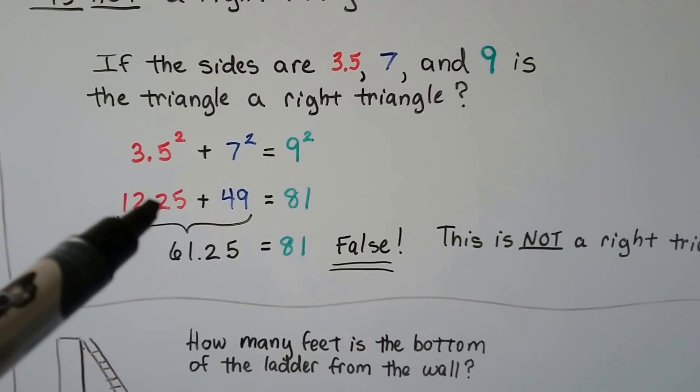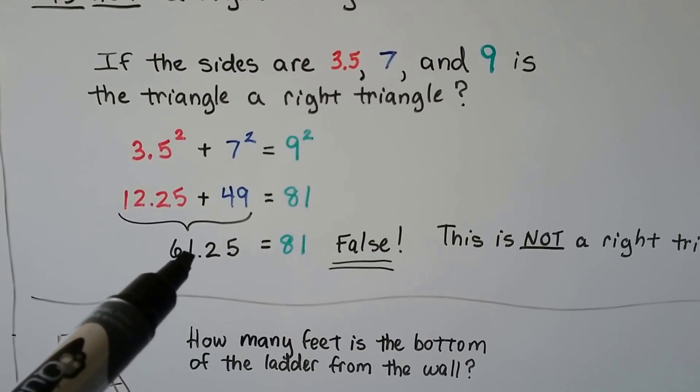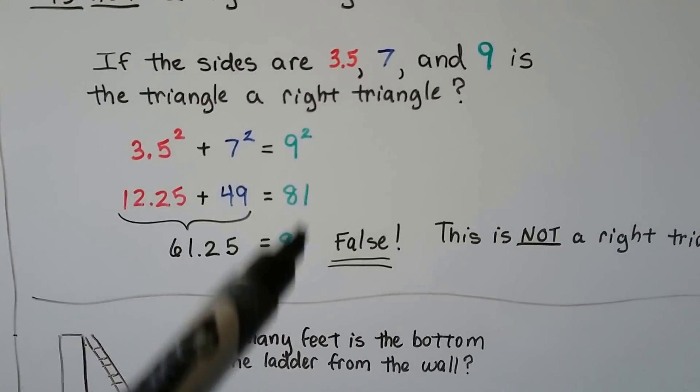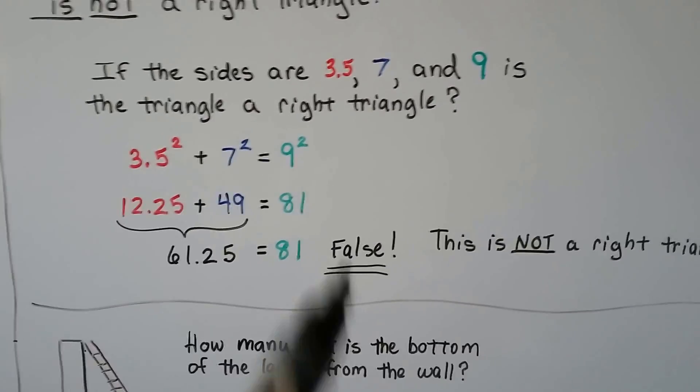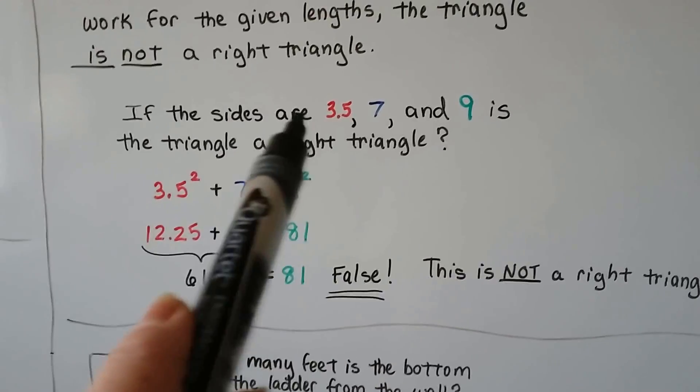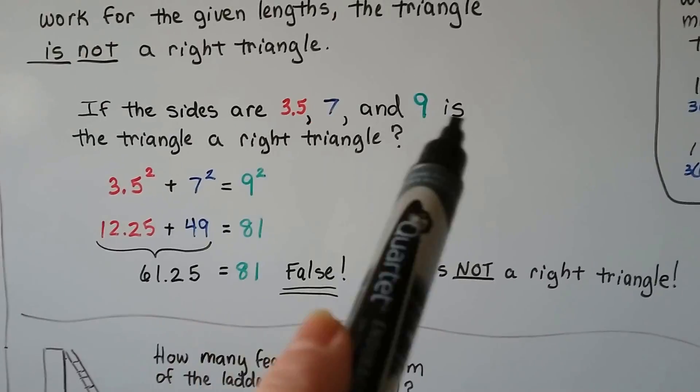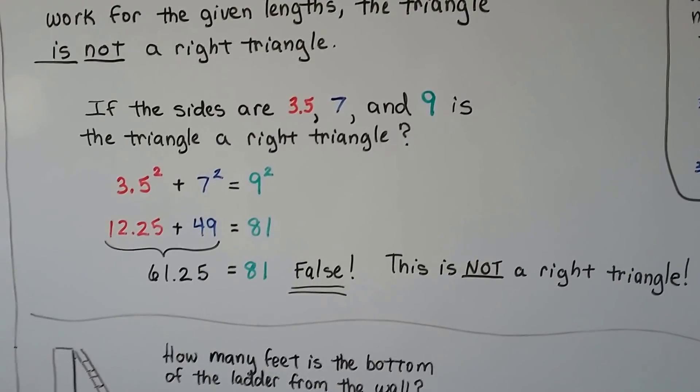We add these two together, and we get a sum of 61.25. Well, that doesn't equal 9 times 9, which is 81, so that's false. So, these do not make the sides of a right triangle. We've just proven it, see?